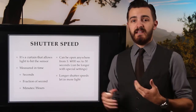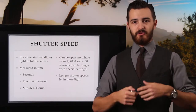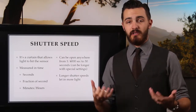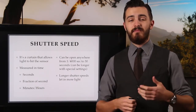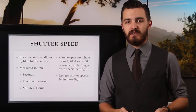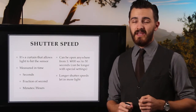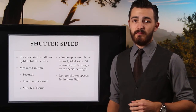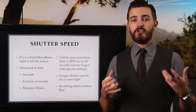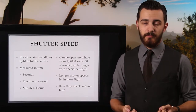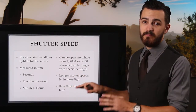Longer shutter speeds let in more light — that's why the shutter was invented and what it's supposed to do. In dimmer environments, the shutter will have to stay open longer to let in enough of that dim lighting. In bright environments, it can be open for a shorter time period so as to not let in too much light. But it also happens to affect motion blur, because whatever motion occurs during that time period is going to show up as blur in the photo. The shutter speed is basically affecting two things: light and motion blur.